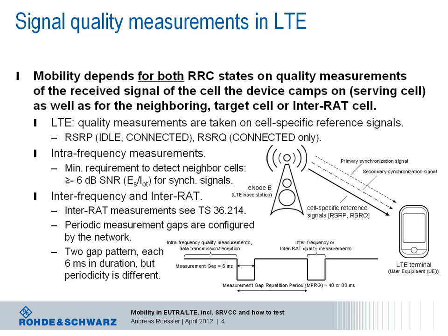So every 40 or 80 milliseconds there is a gap where the device can retune its receiver to do quality measurements — either on different LTE frequency bands, measuring RSRP and also RSRQ in connected state, or doing quality measurements for other radio access technologies. All these are specified in TS 36.214.